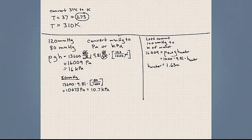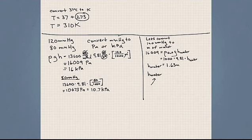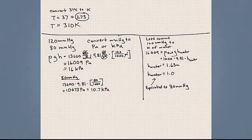I'd like you to practice the next one on your own: calculate the height of water equivalent to 80 millimeters of mercury. The answer is 1.09 meters. So our two answers are: 120 mmHg equals 1.63 meters of water, and 80 mmHg equals 1.09 meters of water.